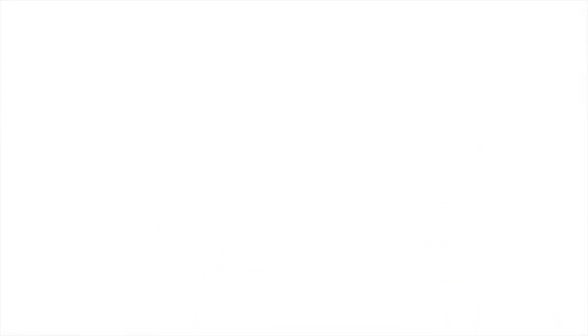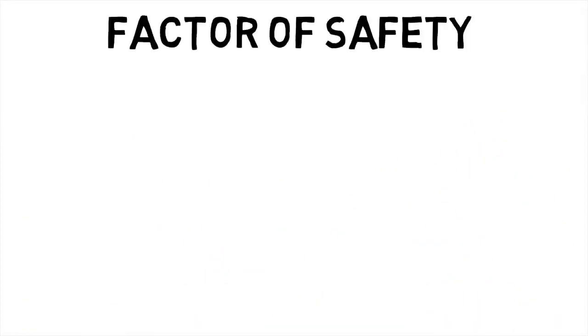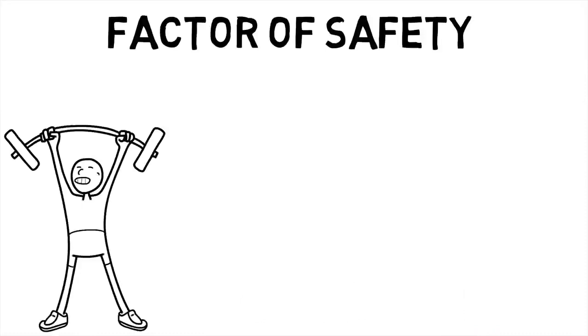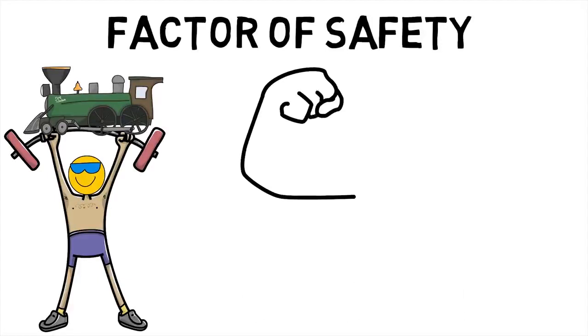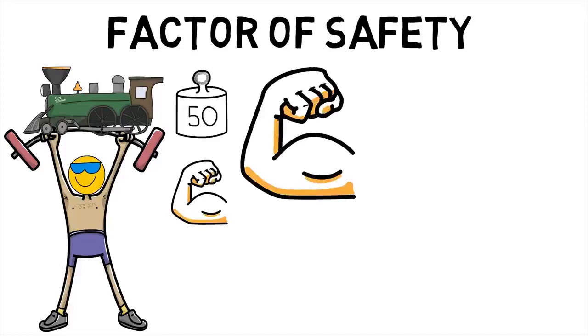A doctor will test for rigidity by flexing and extending your relaxed wrist and the elbow joint. He or she will look for sustained lead-pipe rigidity when performing the step, or intermittent cogwheel rigidity if you also have tremor.